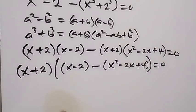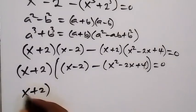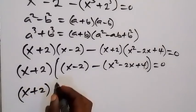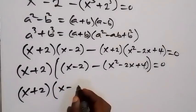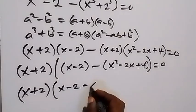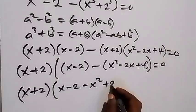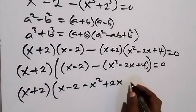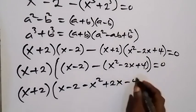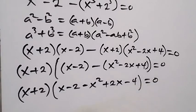From here we can still simplify the bracket. We have (x + 2), then we use the minus sign to open the bracket, giving minus x squared, then plus 2x — because minus times minus becomes plus — then minus 4, all equal to zero.